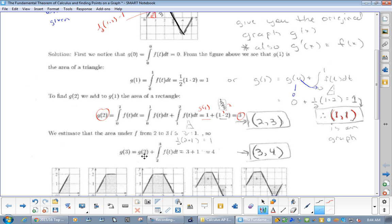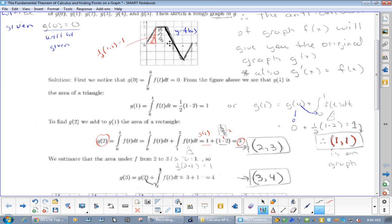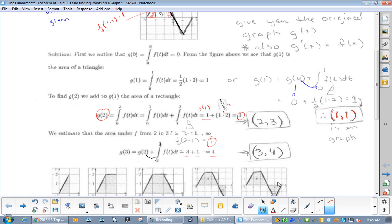Now, g(3) would be g(2), plus... Do you see how that should be from 2 to 3? I don't know if that looks like a 3. The original that I put on our website is a lot clearer than this. So, you go from 2 to 3 now. Now, from 2 to 3 is another triangle. So, we're dealing with this triangle right here. So, that's 1 half AB again, and that would be 1 times 2 times 1 would be 1. So, remember, 3 with g(2), plus 1 is 4. So, 3 comma 4 is now the coordinate of g(x).